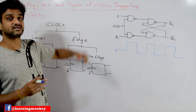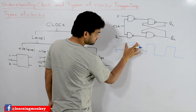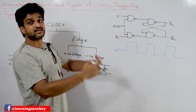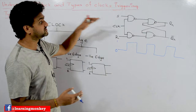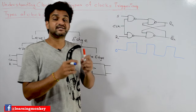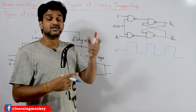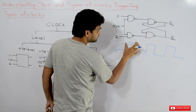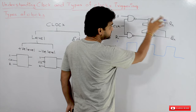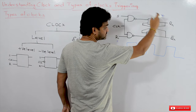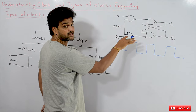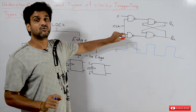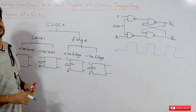We also discussed that whenever the clock is 1, the circuit will work — in the sense, if you want to make any changes in the circuit, those changes are done whenever the clock is 1. That is what we call triggering. That is the point where triggering of the circuit happens, which means the value stored at the input will change and based upon the inputs the output will change.